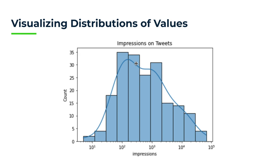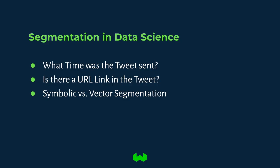When we have this distribution, the task of segmentation is to take apart this visualization and see how it varies with respect to certain features. We might ask: what time was the tweet sent — does sending a tweet in the middle of the night result in very low impressions? Or did sending it at 10 in the morning on Monday result in a successful tweet? Then we might ask: is there a URL link in the tweet — does pointing people off Twitter cause the algorithm to not promote our tweet?